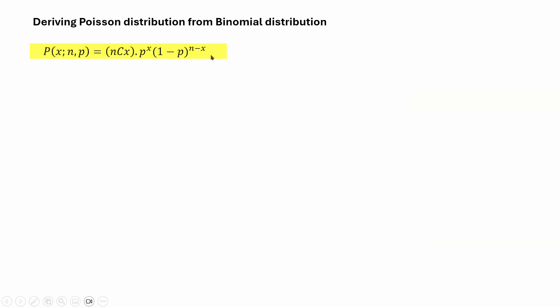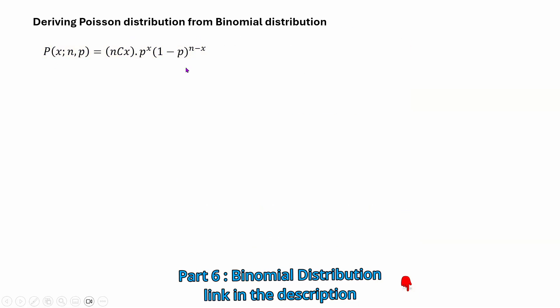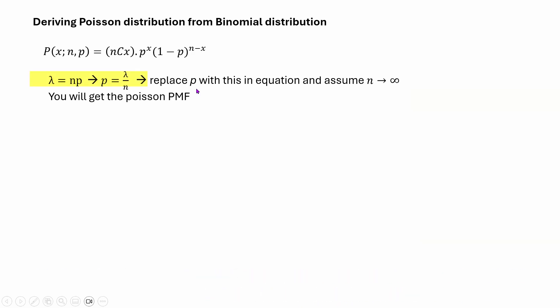We can actually derive the Poisson distribution from binomial distribution. We know the binomial PMF from the previous video, and we know that lambda equals np, so p equals lambda divided by n. We can replace p in the binomial equation with lambda over n, and then assume that the number of trials n tends to infinity. Making these two assumptions, we can derive the Poisson PMF.